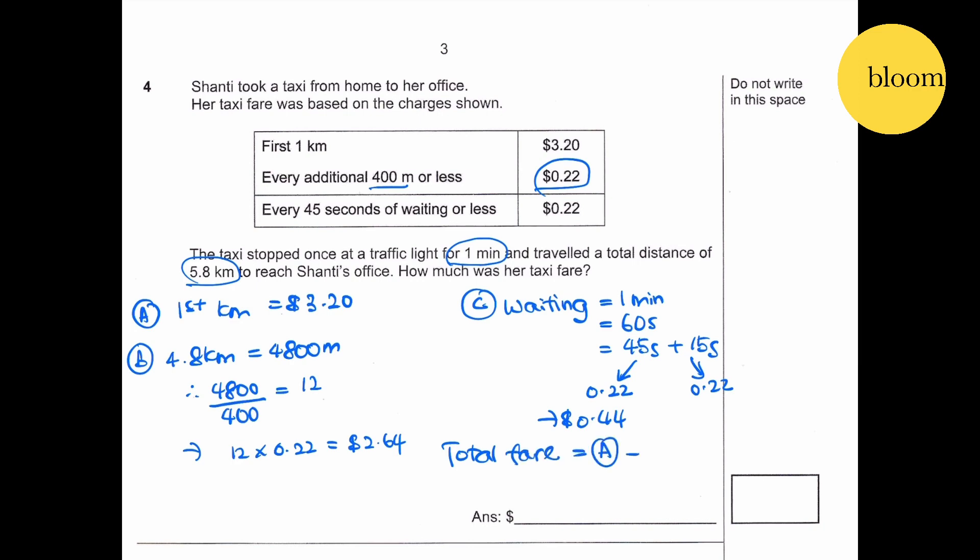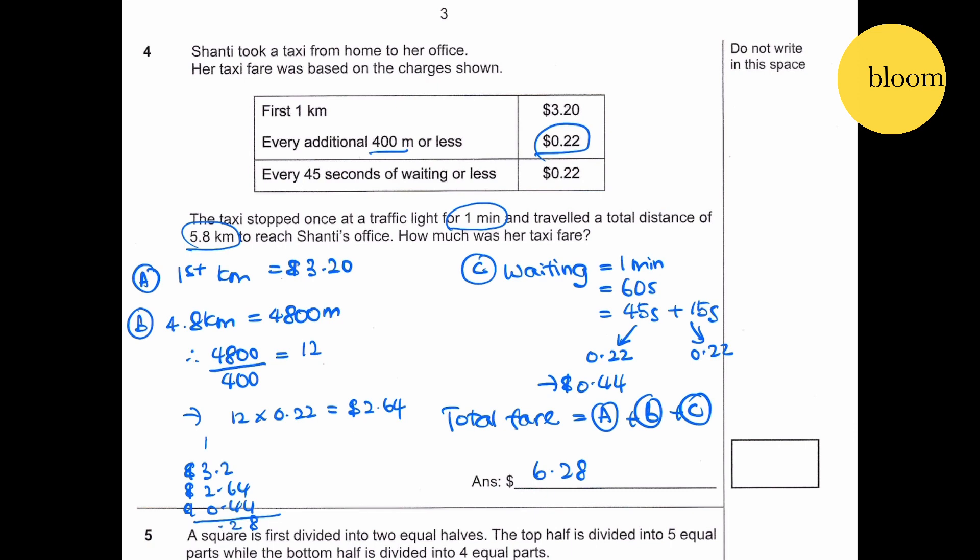Total fare: A plus B plus C gives you 6.28 cents. 3.20 plus 2.64 plus 0.44. That's 6.28, correct.